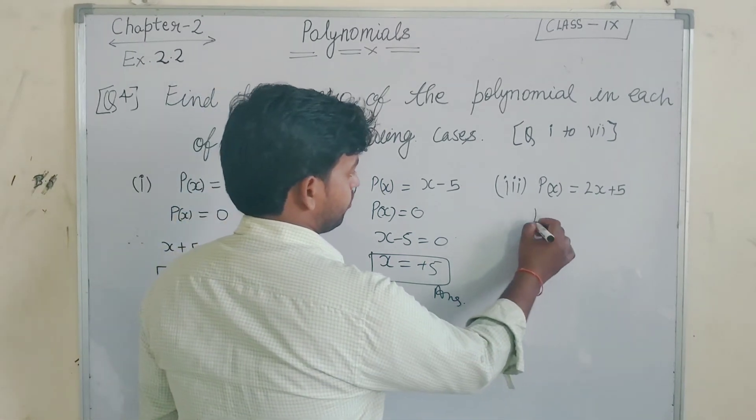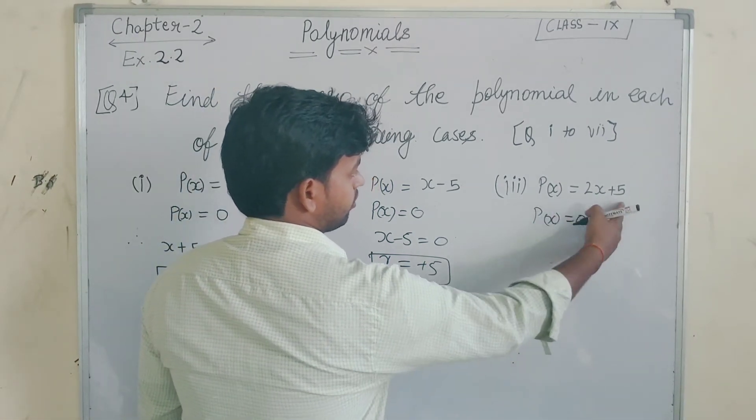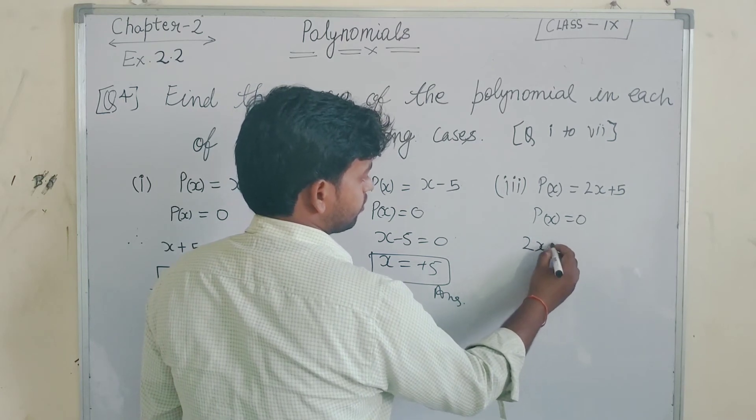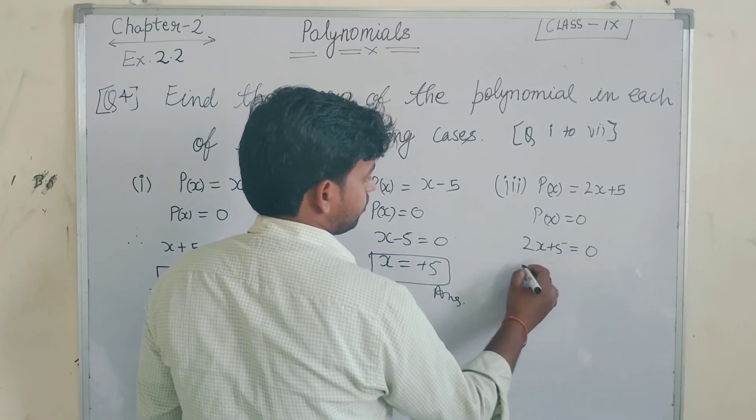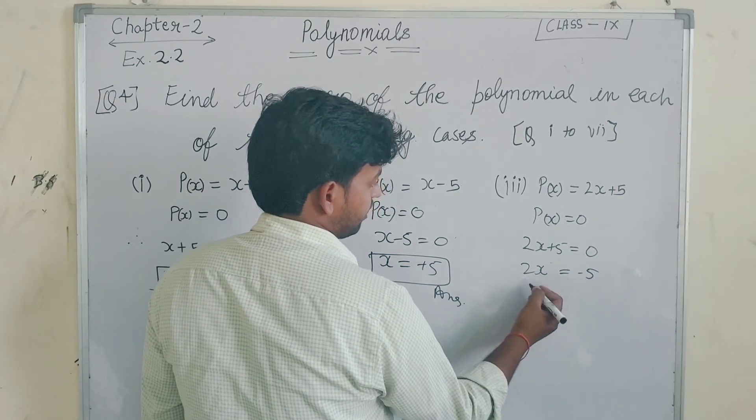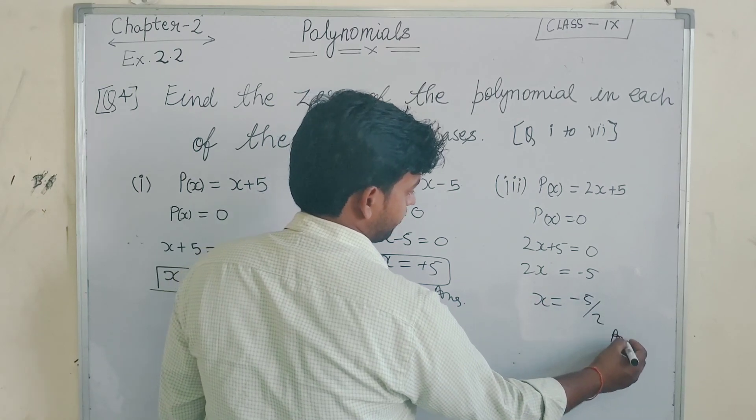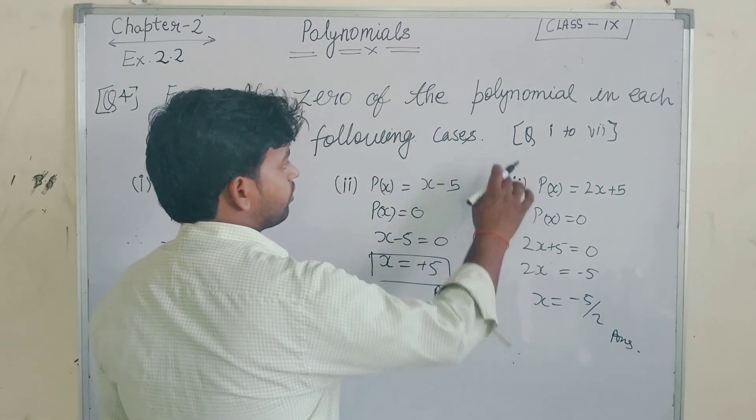Similarly, for the next problem, P(x) equals 0 and 2x plus 5 equals 0. So 2x equals minus 5, x equals minus 5 by 2. And when 2x equals 0, x equals 0.